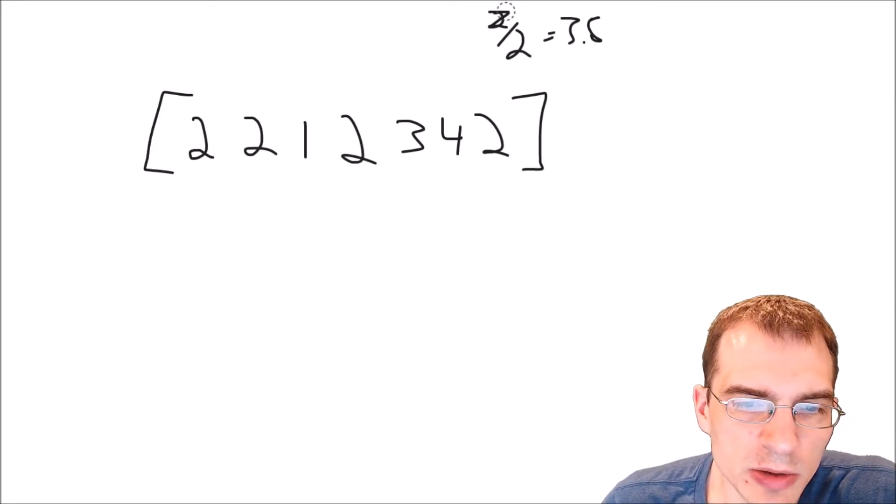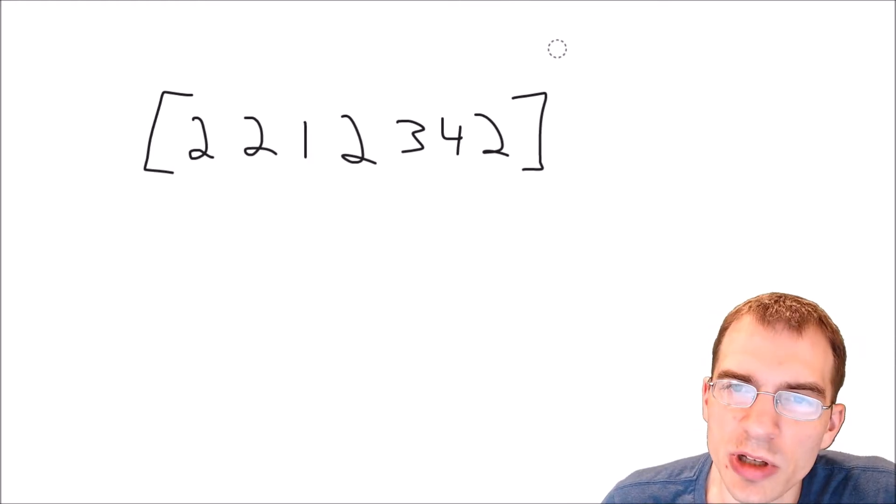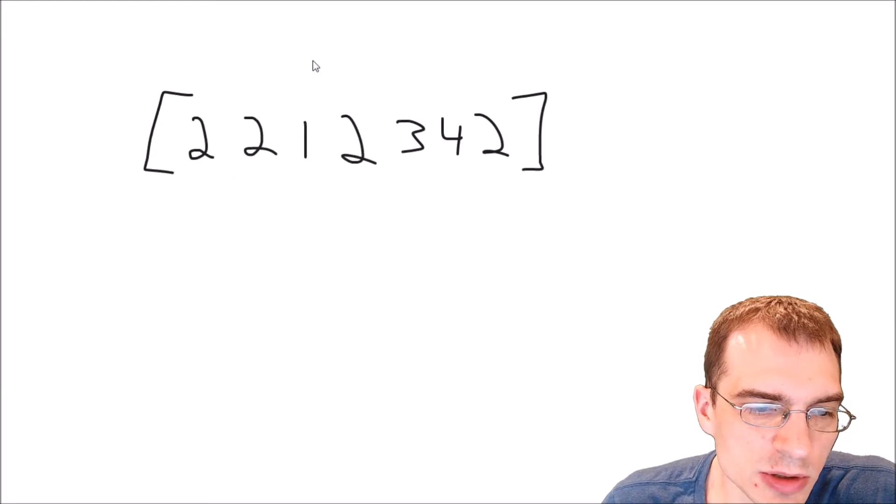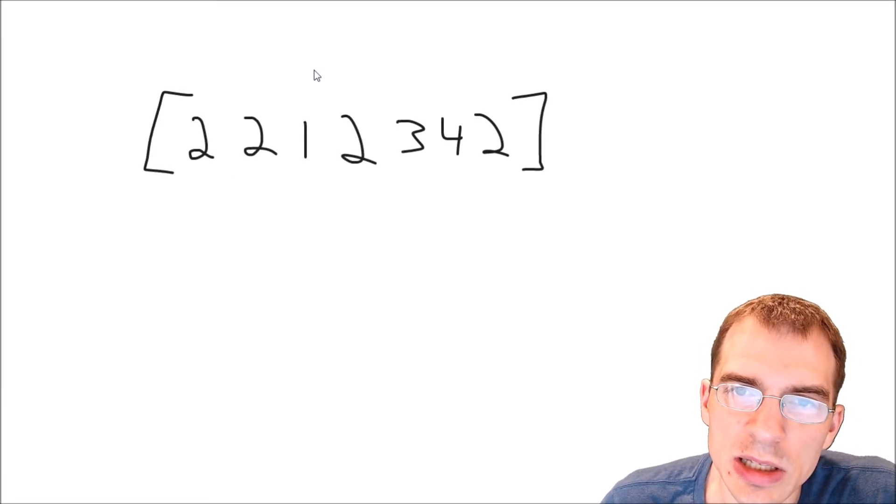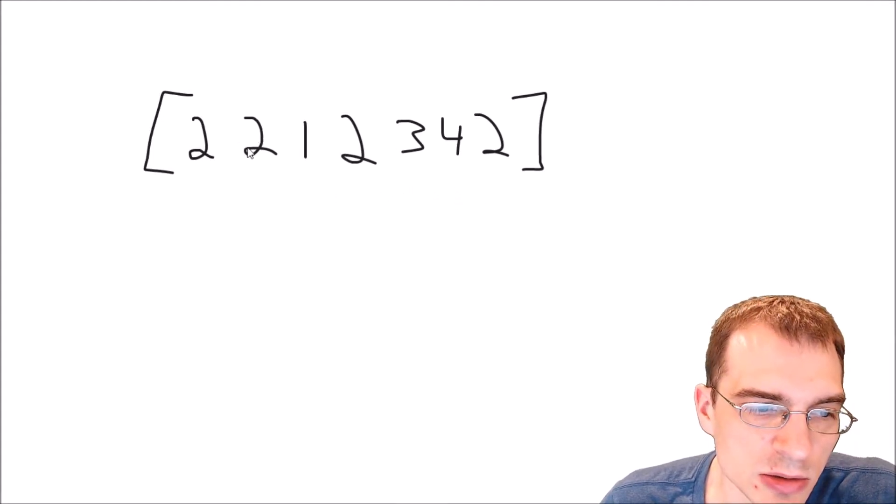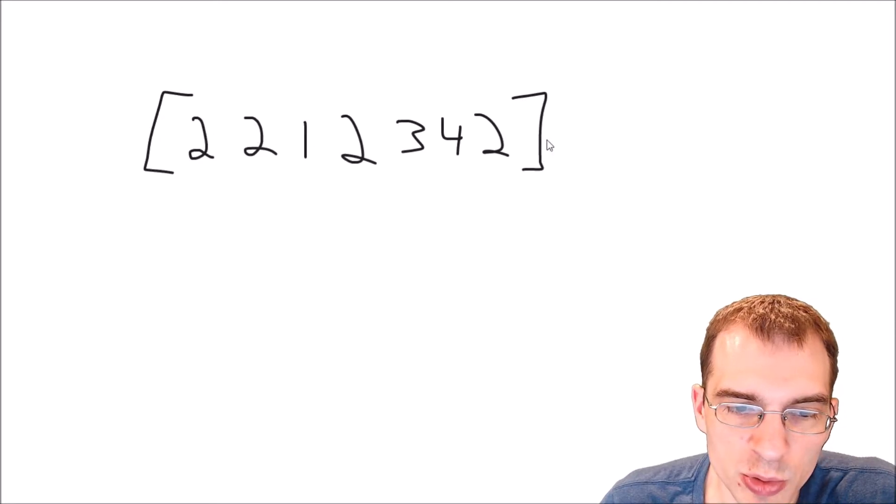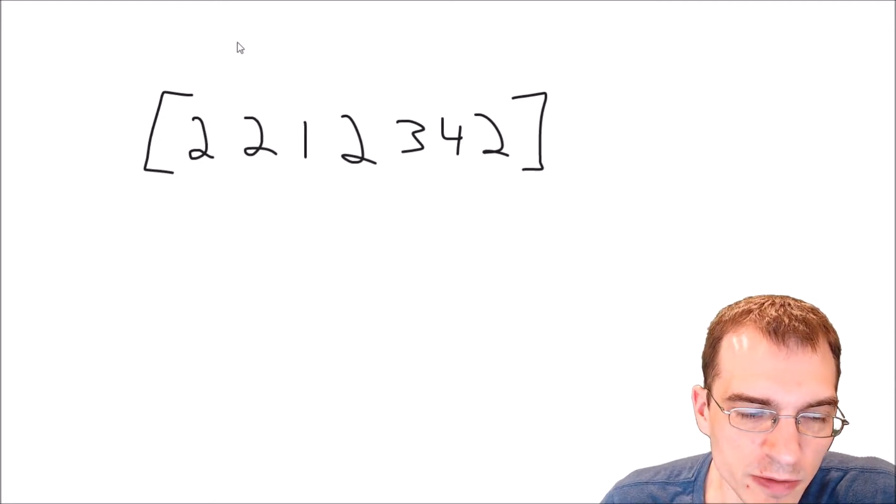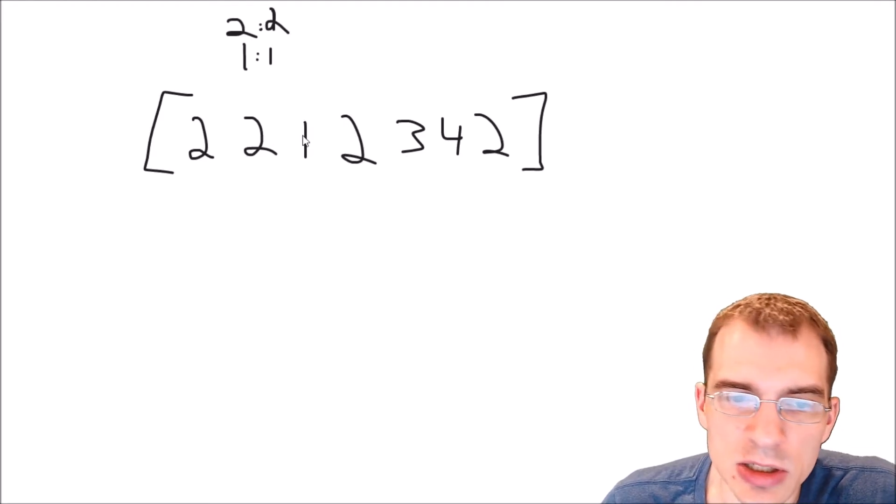But how could we go about finding what the majority element is in code? Well that seems like it wouldn't be too difficult. All we really have to do is keep track of each element and count up how many times they appear. So for instance we could just loop through this array and say all right the first thing is 2 and now we've seen 2 one time. The next element is 2 so now we've seen 2 two times. The next element is 1 so now we've seen 1 one time. And we just continue like that.